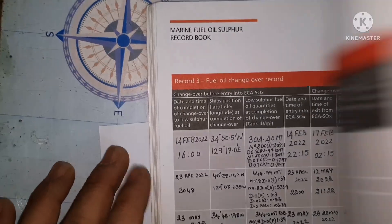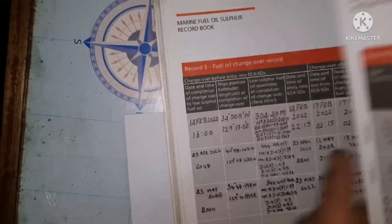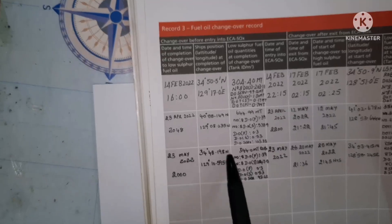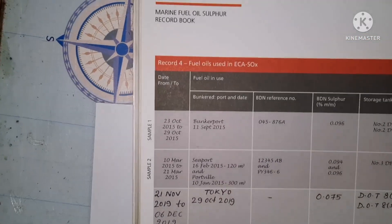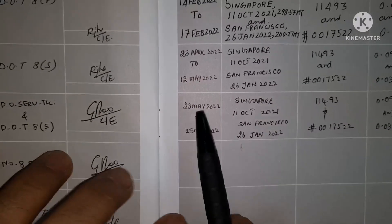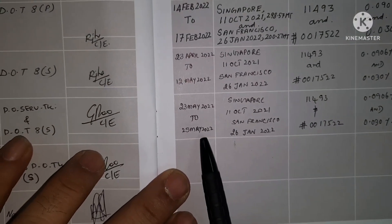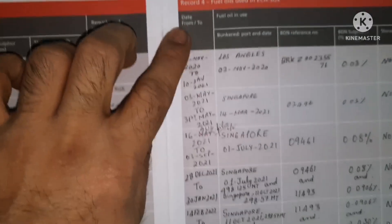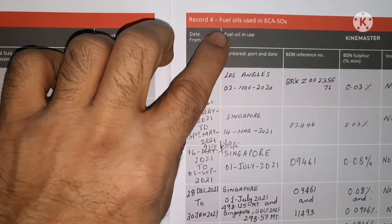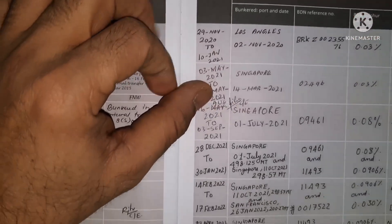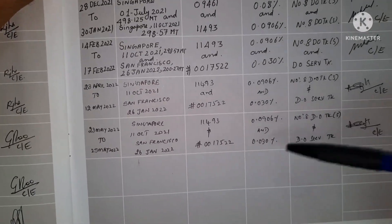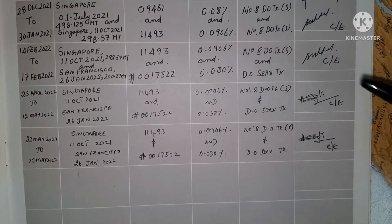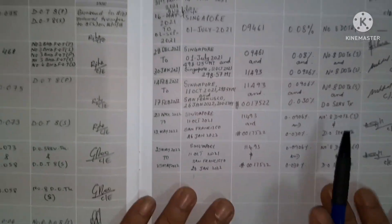Record 4 covers the fuel oil used during the changeover in ECA and Sulfur Emission Control Area. We have to give details of those fuel oils used in the ECA. For example, I used LSMGO from 23 May to 25 May 2022. Here we write from what date to what date, what fuel was used — in this case fuel from Singapore and San Francisco — along with the BDN number of both fuels, the sulfur content of both fuels, and where those fuels were stored. This is the information you get in Record 4.